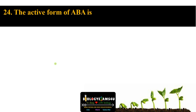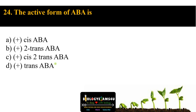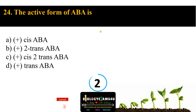Question number twenty-four: the active form of ABA (abscisic acid) is option A cis-ABA, option B trans-ABA, option C cis-2-trans-ABA, option D trans-ABA. The answer is (+)-cis-ABA.